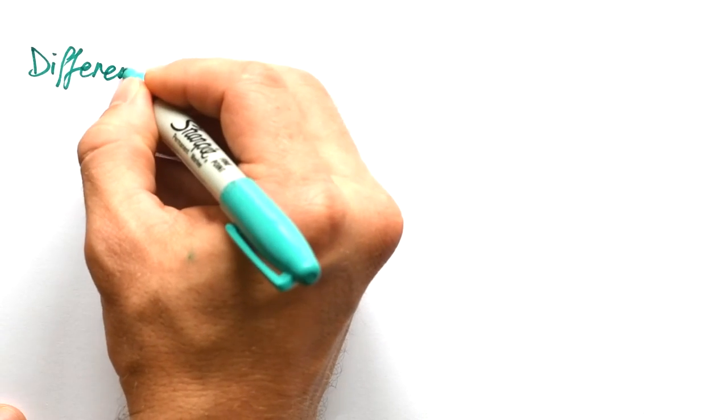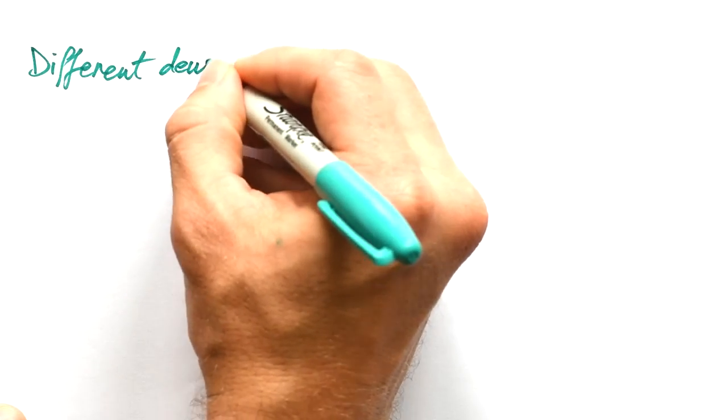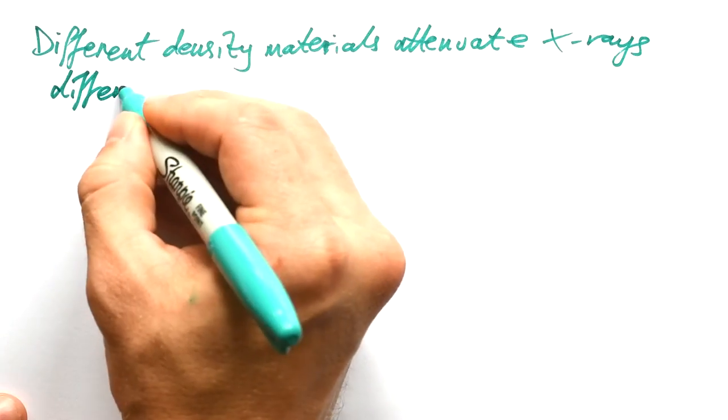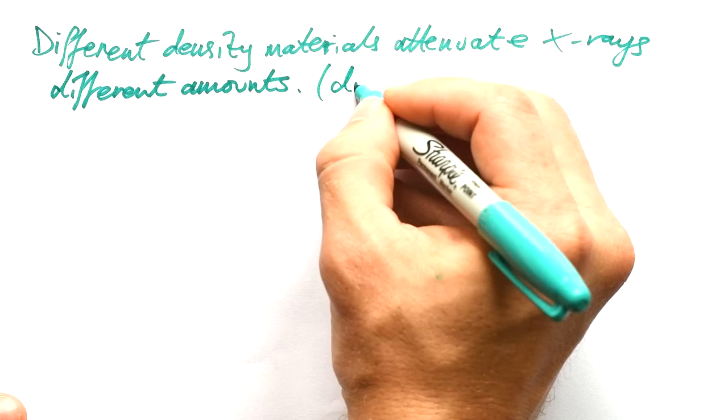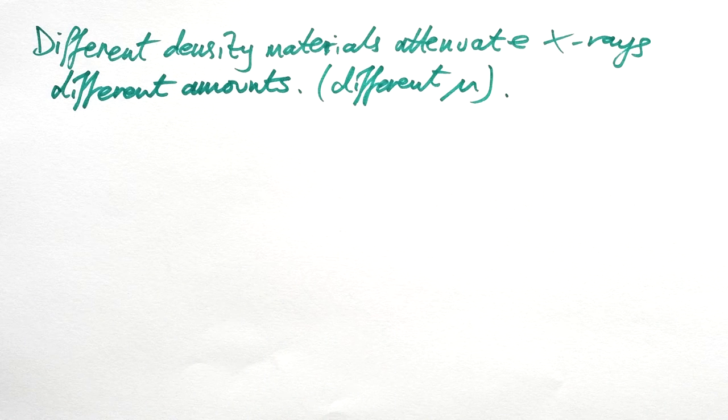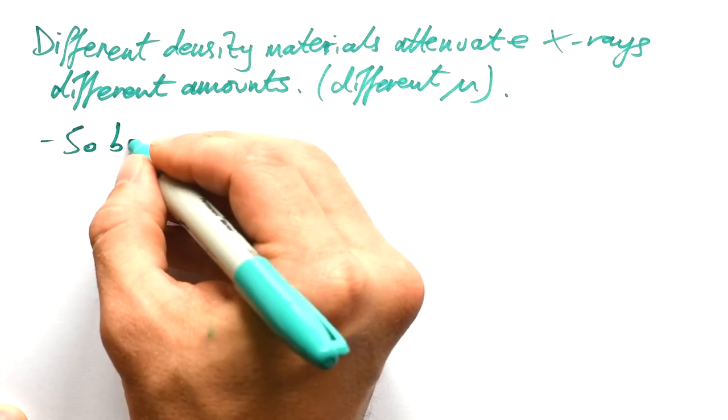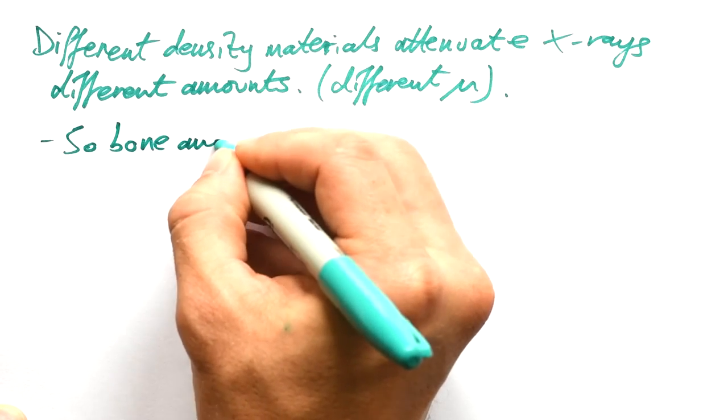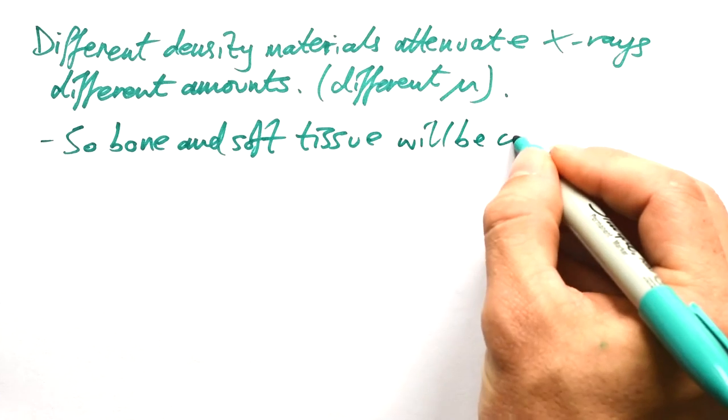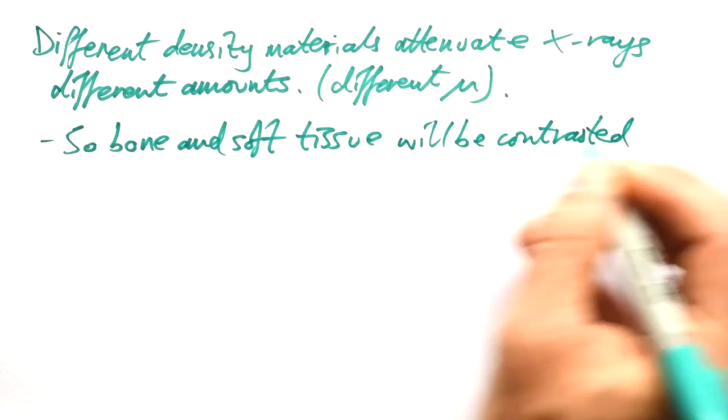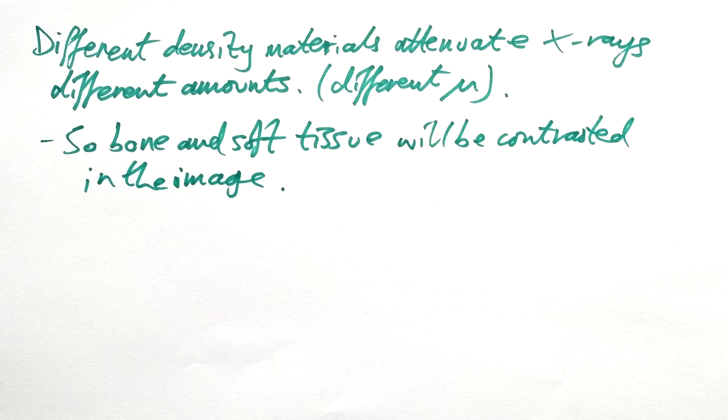The reason that an X-ray works is because different density materials attenuate X-rays different amounts. In other words, they have a different mu. So bone and soft tissue have a different coefficient of attenuation. And so that means that bone and soft tissue will be contrasted in the image. If bone and soft tissue had the same coefficient of attenuation, then the whole film would be black. There would be no white areas, no black areas. We wouldn't be able to see the difference. So that's the important thing. We need to be able to see this contrast in the final image.